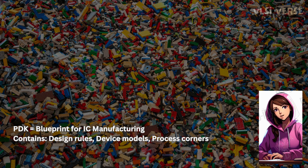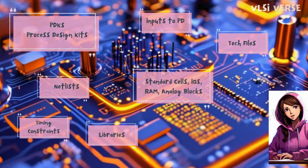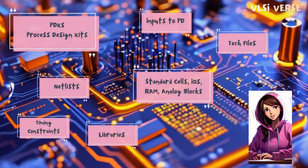Next up is process corners. Process corners account for variations in manufacturing. Even though we aim for perfection, real-world conditions can cause slight shifts in transistor performance due to temperature or voltage variations. A PDK includes fast, slow, and typical process corners to test your design under multiple conditions.